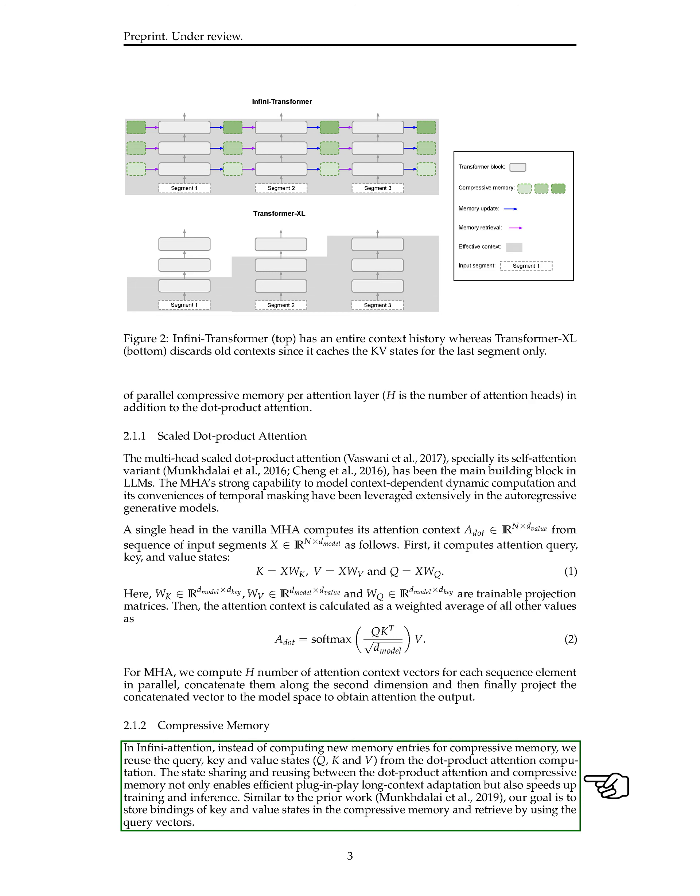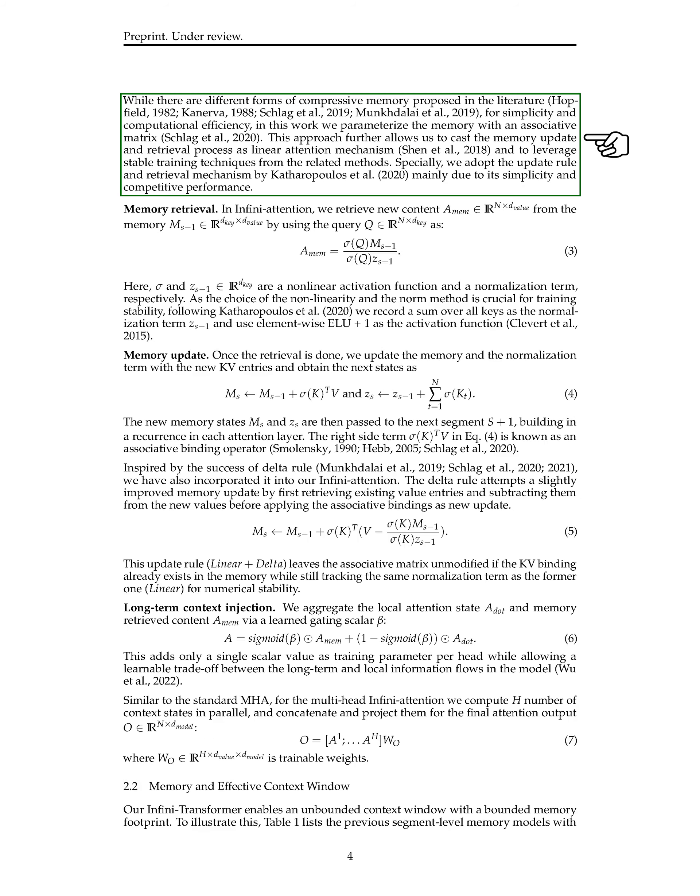Our aim is to store key and value state bindings in the compressive memory and retrieve them using query vectors. To keep things simple and computationally efficient, we use an associative matrix to parameterize the memory. This approach allows us to treat the memory update and retrieval process as a linear attention mechanism and utilize stable training techniques from related methods. We adopt a specific update rule and retrieval mechanism for their simplicity and competitive performance.